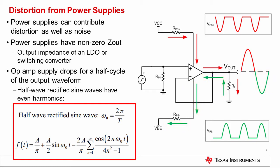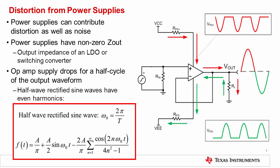Power supplies all have some non-zero output impedance, represented in this schematic as RPS plus and RPS minus. This means that as the op amp sources current from the positive supply to the load, a voltage drop occurs across the output impedance of the power supply. If we measured the voltage at the op amp positive power supply pin, we would see little dips in the power supply voltage when the op amp conducts current from the positive supply. Likewise, if we look at the negative supply pin, we would see little humps in the power supply voltage when the op amp conducts current from the negative supply.